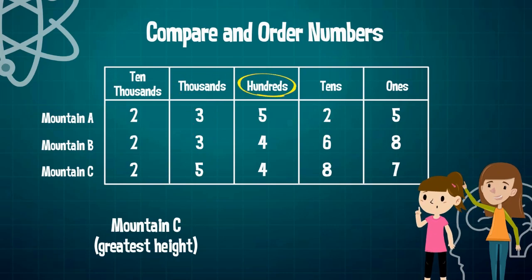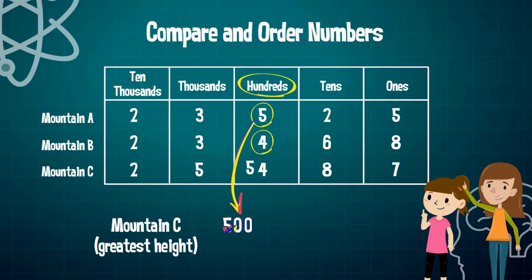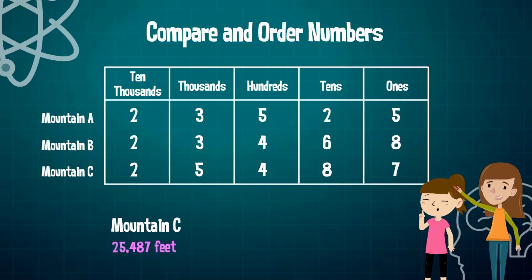If we were to look at the hundreds place, Mountain A has a digit of five and Mountain B has a digit of four. Since five is greater than four, or if we are talking about the value of the digits, 500 is greater than 400, we now know that Mountain A is greater than Mountain B. So if we were to pull all three mountains in order, Mountain C has the greatest height, then it would be Mountain A, and at last, Mountain B.